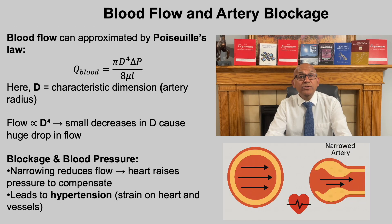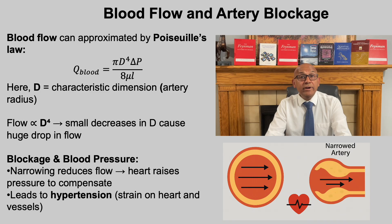Blood is a viscous fluid moving through arteries and veins. While real blood flow is pulsatile due to the heartbeat and the vessels are elastic, for scaling purposes it can often be approximated by Poiseuille's law. According to this law, the blood flow rate is proportional to the fourth power of the artery's radius. This scaling has dramatic consequences — even a small narrowing of an artery leads to a huge reduction in blood supply. For example, if the radius is reduced by half, the flow decreases to 1/16th of its original value — only about 6 percent — explaining why the cardiovascular system is extremely sensitive to arterial narrowing called stenosis.